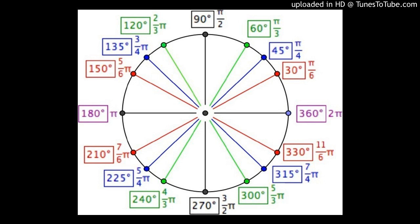For example, to convert 30 degrees to radians: 30 × π/180 = π/6. So 30 degrees is π/6 radians. Similarly, 90 degrees is π/2 radians, and 60 degrees × π/180 = π/3 radians.